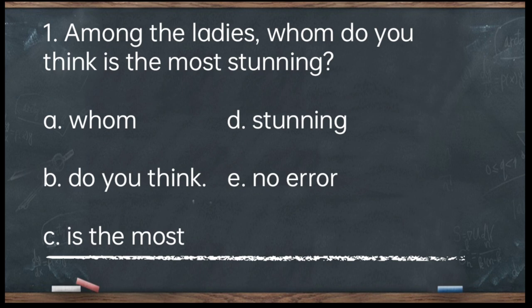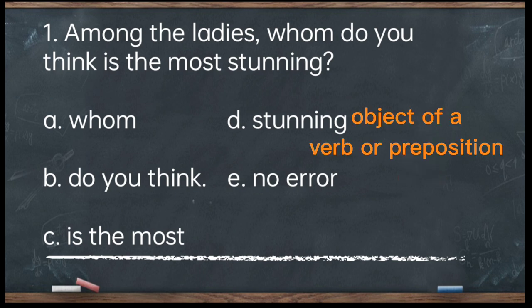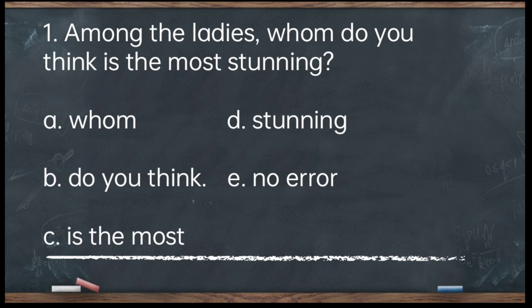The answer is letter A — 'whom.' Whom is an interrogative pronoun used to refer to the object of a verb or a preposition. Going back to the sentence, it is asking for a subject — one of the ladies. Therefore, it should be WHO. WHO is used to refer to the subject of a sentence. The corrected sentence: Among the ladies, who do you think is the most stunning?